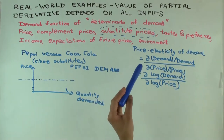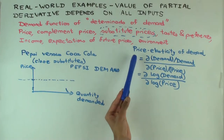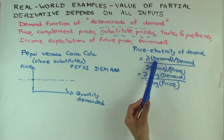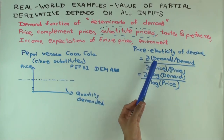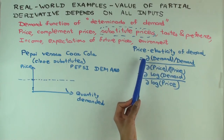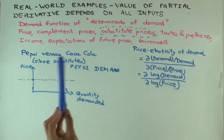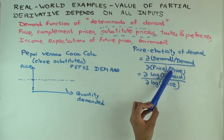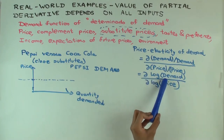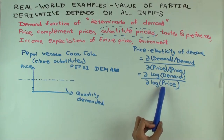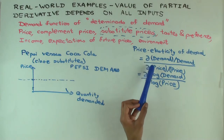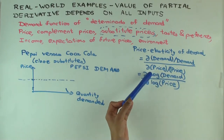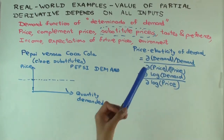Price elasticity is basically the rate of change of quantity demanded with respect to price, holding other variables constant — except you divide by the demand and by the price to keep it dimensionless and control for size. Another way of saying it is the rate of change of the log of quantity demanded with respect to the log of price. It's essentially like taking the partial derivative but normalized, so it's like a partial derivative.